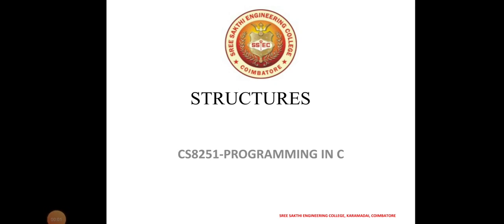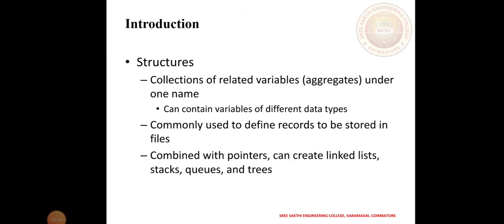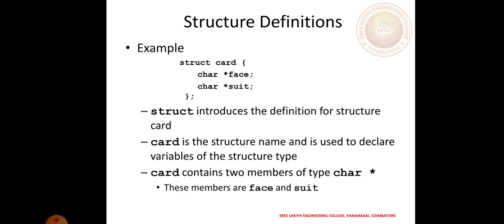Today we are going to discuss the topic called structure in C. A structure is a collection of related variables under one common name. It can contain variables of different data types, and is commonly used to define a record to be stored in a file. Accompanied with a pointer, it can create linked lists, stacks, queues, and trees.